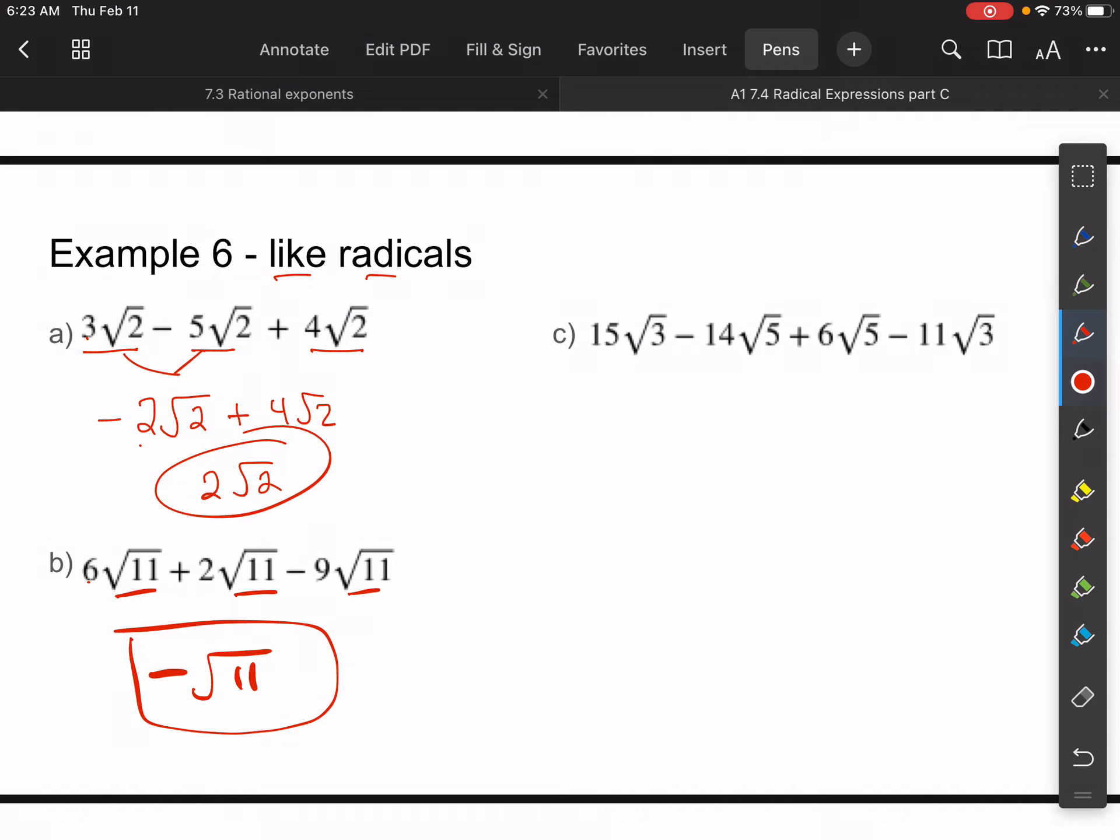And then notice in C, now we have some that are not like terms. So let's make sure they're all in simplest form. I cannot take any perfect squares out of these because they're 3 and 5. There's no perfect square that evenly divides into those. So I can now just combine the threes, and then I can combine, oh, there's my cat. Sorry. And then the fives.